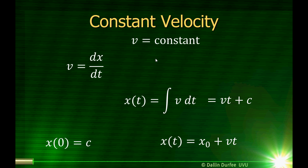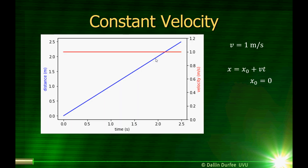So position is the initial position plus velocity times time. If I plot this on a graph, if my velocity here in red is constant, the position is just a straight line whose slope is equal to the velocity. So that's exactly what we expected to happen. The calculus gave us what we expected.